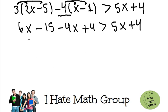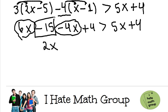Let's continue. Let's group the x's on this side. 6x minus 4x is the same as 2x. Now let's group the numbers. Negative 15 plus 4 is negative 11, greater than 5x plus 4.